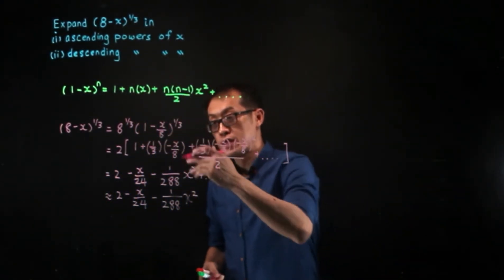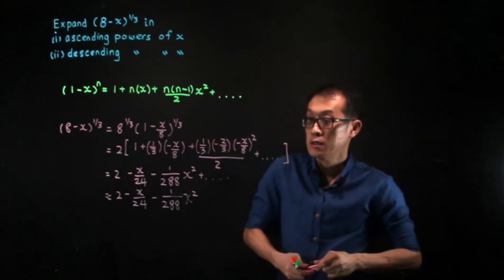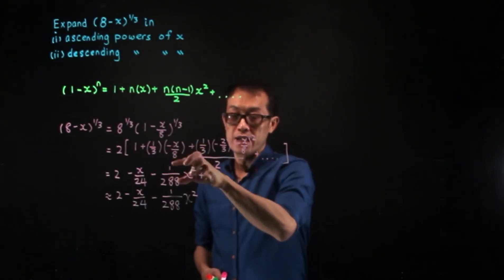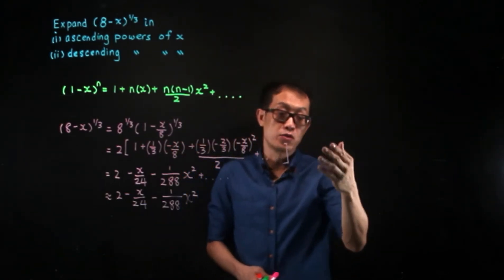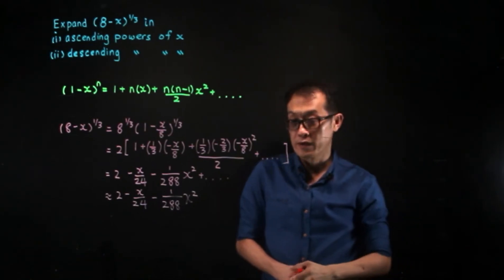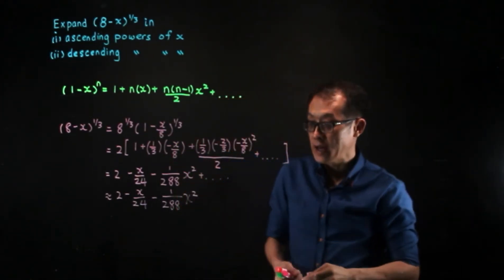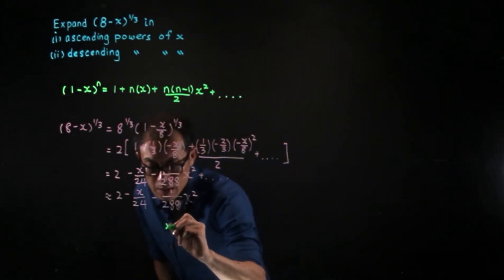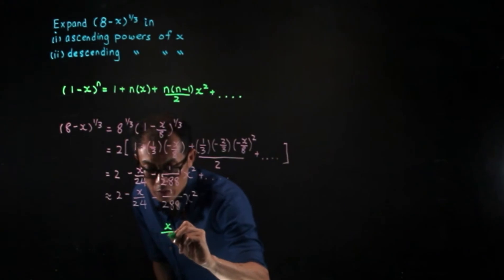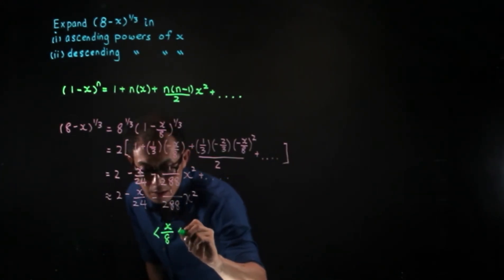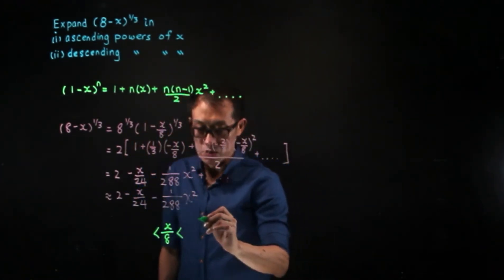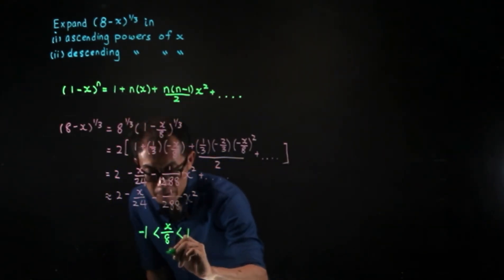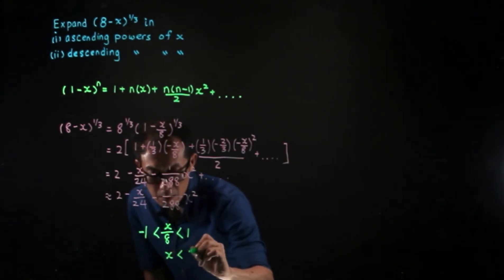Now, what is the validity of this expansion? Looking at the successive terms, the ratio involves minus X over 8. For the expansion to be valid, we need the absolute value of X over 8 to be strictly between −1 and 1. Multiplying through by 8, the expansion is valid for X between −8 and 8.